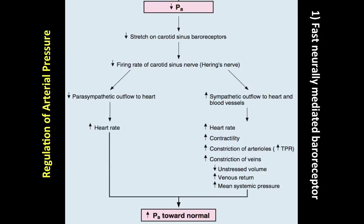This is a fast neural mechanism — a negative feedback system our body adapted to. It is responsible for minute-to-minute regulation of arterial blood pressure, meaning every second your blood pressure is regulated by this system, along with the renin-angiotensin system, which we'll cover in the next video.